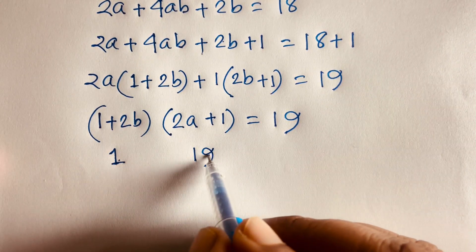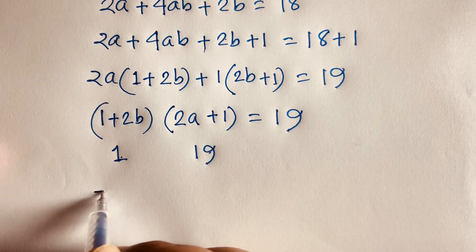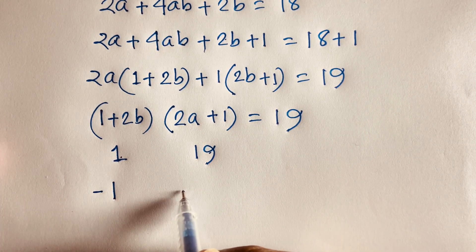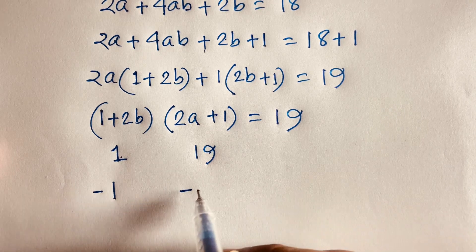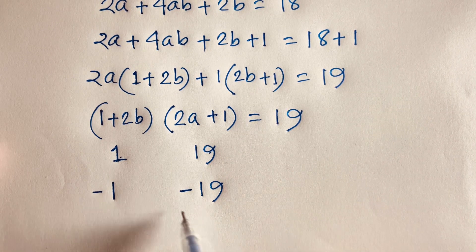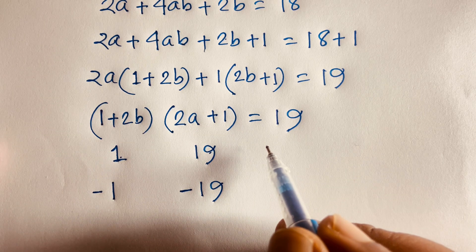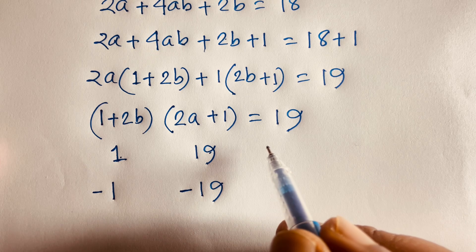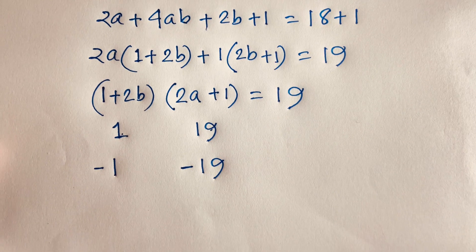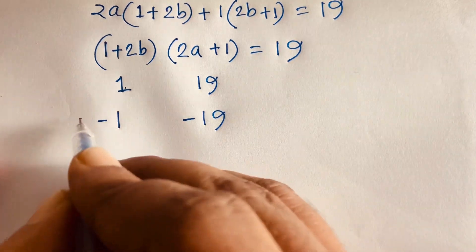We can see that 1 times 19 equals 19. We could also consider minus 1 times minus 19 equals 19, but since a and b are positive integers, the negative case is rejected.